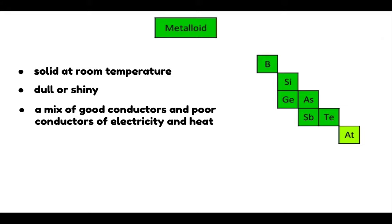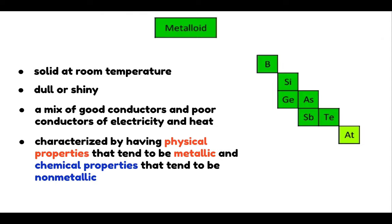Metalloids have properties that are a mix of metal and non-metal properties. They are solid at room temperature and can be dull or shiny. They are a mix of good conductors and poor conductors of electricity and heat. Metalloids are also characterized by having physical properties that tend to be metallic and chemical properties that tend to be non-metallic.